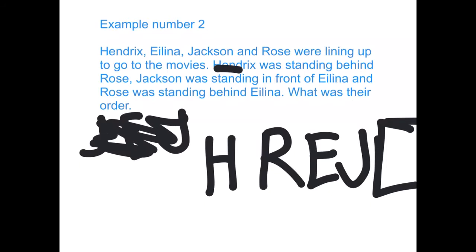Let's see if this makes sense — let's go through it one more time. Hendrix was standing behind Rose. Is Hendrix standing behind Rose? He is. Jackson is standing in front of Alina. Is Jackson standing in front of Alina? Yes, he is. And Rose was standing behind Alina. Is Rose standing behind Alina? Yes, she is. So the order should go: Jackson's first, Alina's second, Rose is third, and Hendrix is fourth. Even though this question seemed difficult at the start, once you draw a picture, it's not that hard.